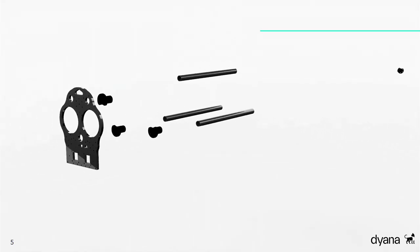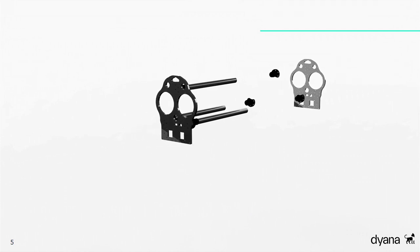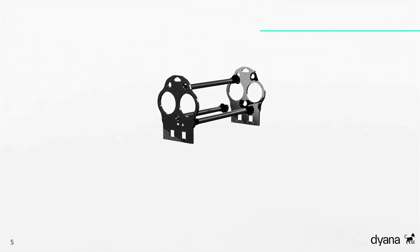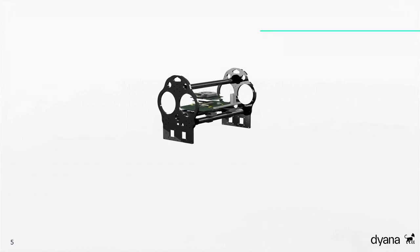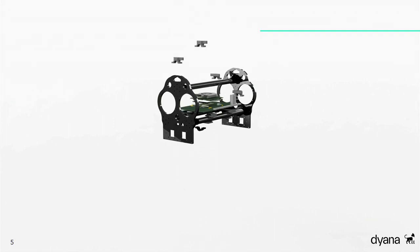Kommen wir nun zu den Einzelheiten von Diana. Wir beginnen mit dem Herzstück des Roboters, dem Torso. Hier sorgen drei Karbonstangen, verbunden mit zwei Endplatten aus Aluminium, dafür, dass sich der Rumpf während dem Gehen nicht verformt. Der Computer und weitere elektrische Komponenten sind mit 3D-gedruckten Anbauteilen auf den Karbonrohren befestigt.